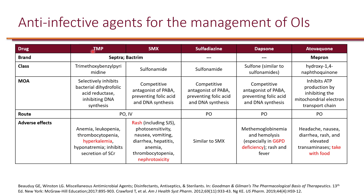Trimethoprim is also available as a standalone drug, but more commonly used in combination. The trimethoprim component can lead to anemia, leukopenia, thrombocytopenia, as well as hyperkalemia and hyponatremia. Trimethoprim can also inhibit the secretion of serum creatinine, artificially increasing serum creatinine levels without affecting GFR. The most important parameter to monitor is hyperkalemia.